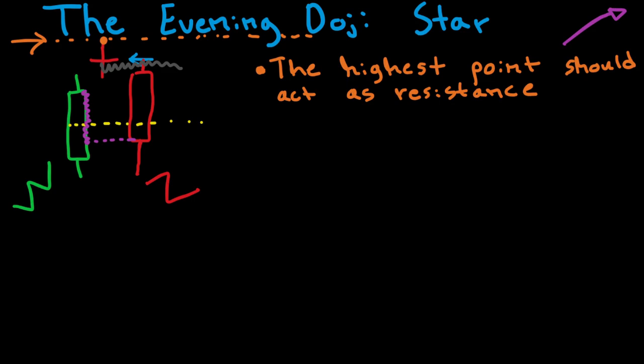But the important thing here is that the highest point should act as resistance in the future, or at least might become resistance. All right, so now I think that was pretty much the basics of the Evening Doji Star. Now we're going to take a look at a real chart here. But before doing that, I just want to give a quick disclaimer that everything in this video is for educational purposes only, and nothing in this video should be considered financial advice.